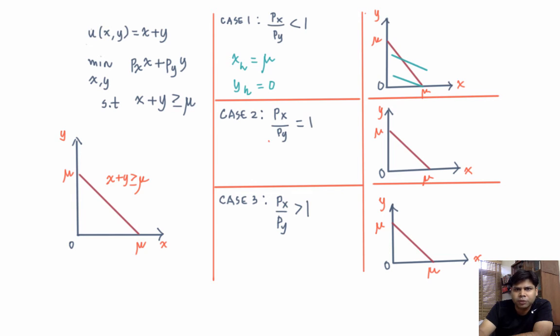So let me plot the iso-expenditure curve first. So now let us write the Hicksian demand. Hicksian demand will be any xh, yh such that xh plus yh is equal to mu. So this is your set of all Hicksian demands when px by py equal to 1.